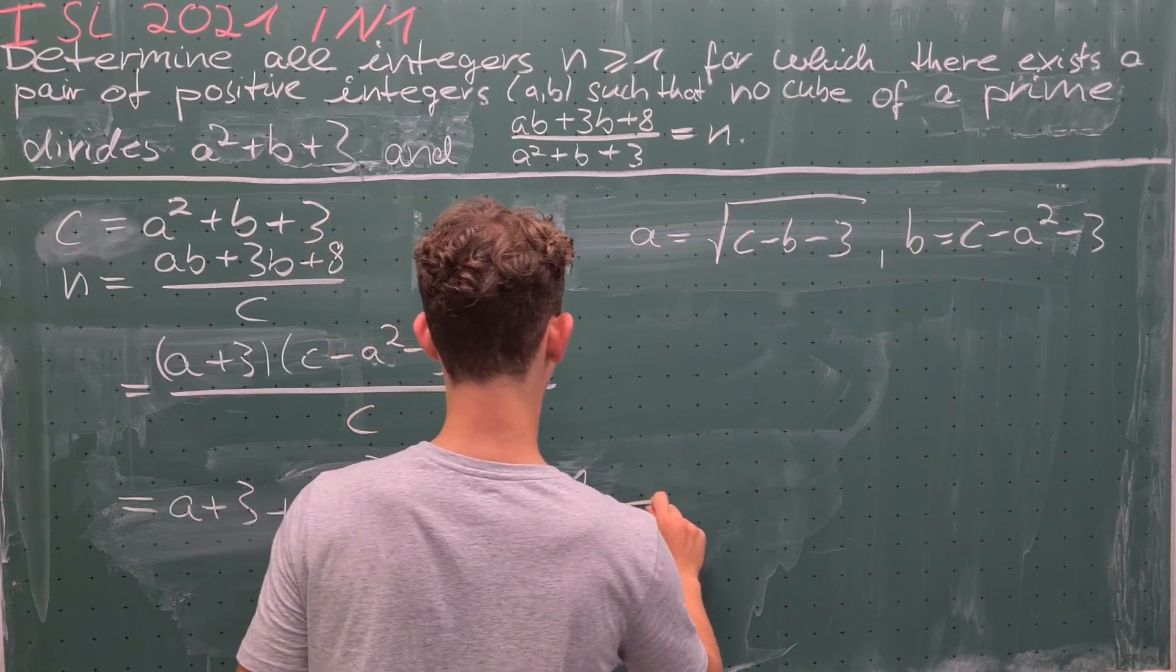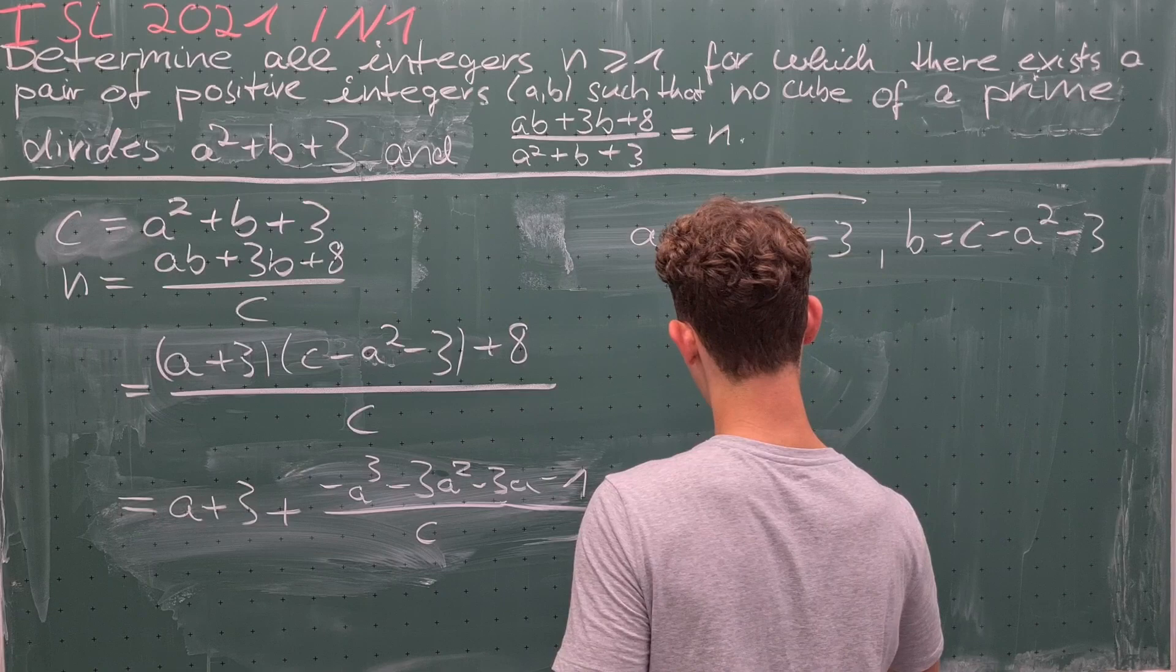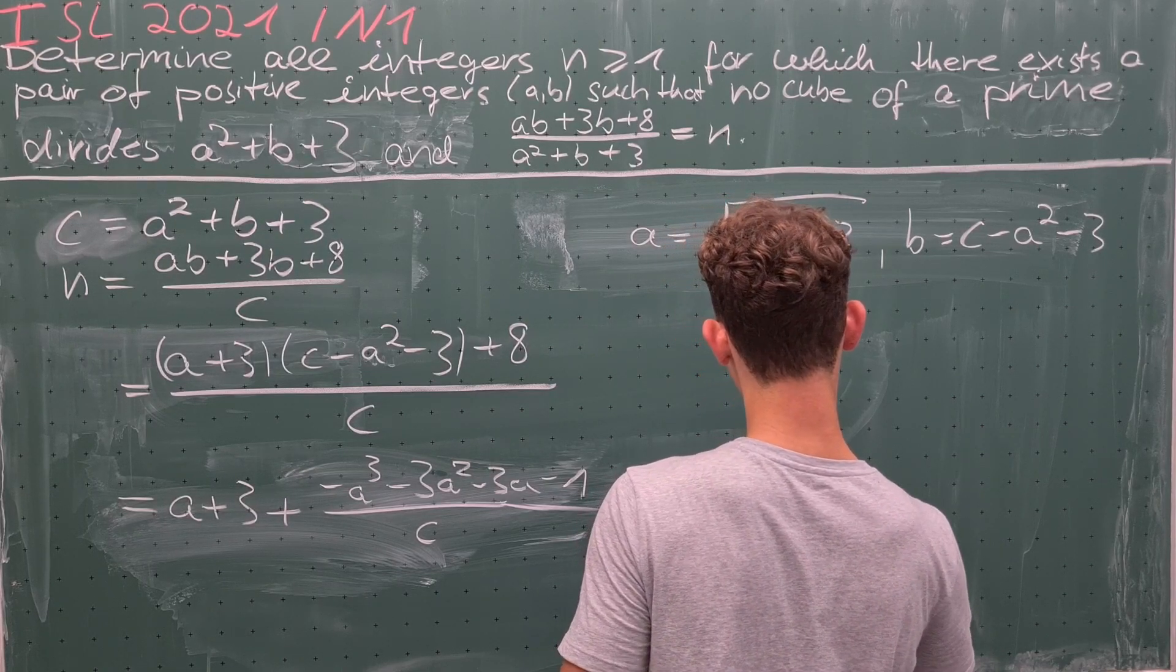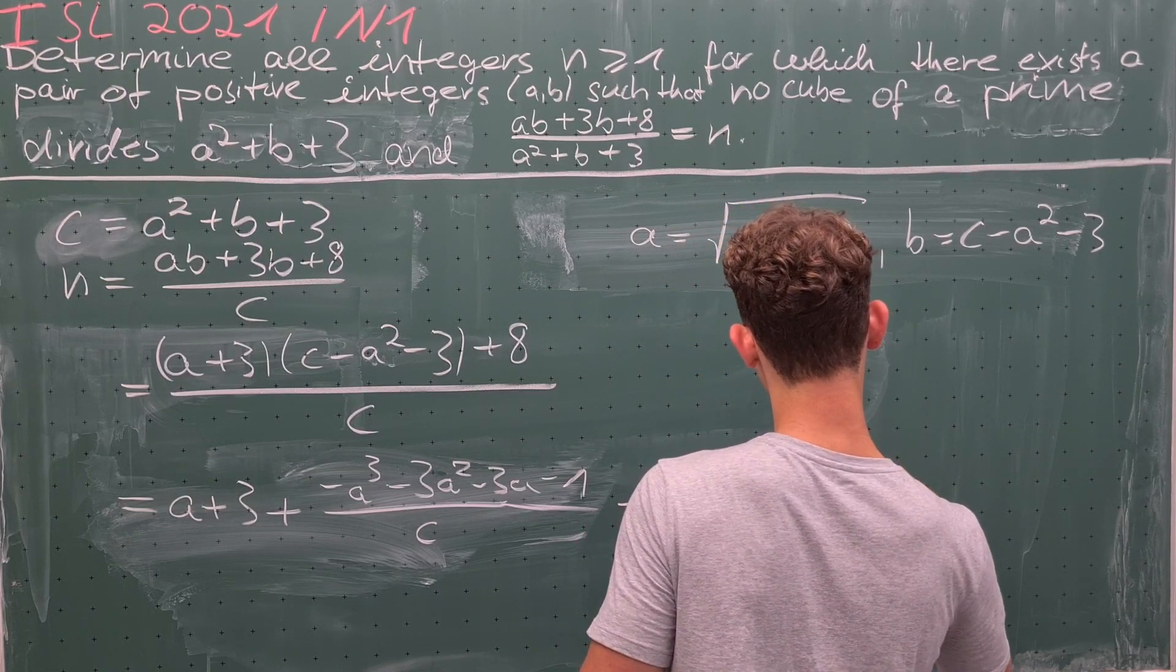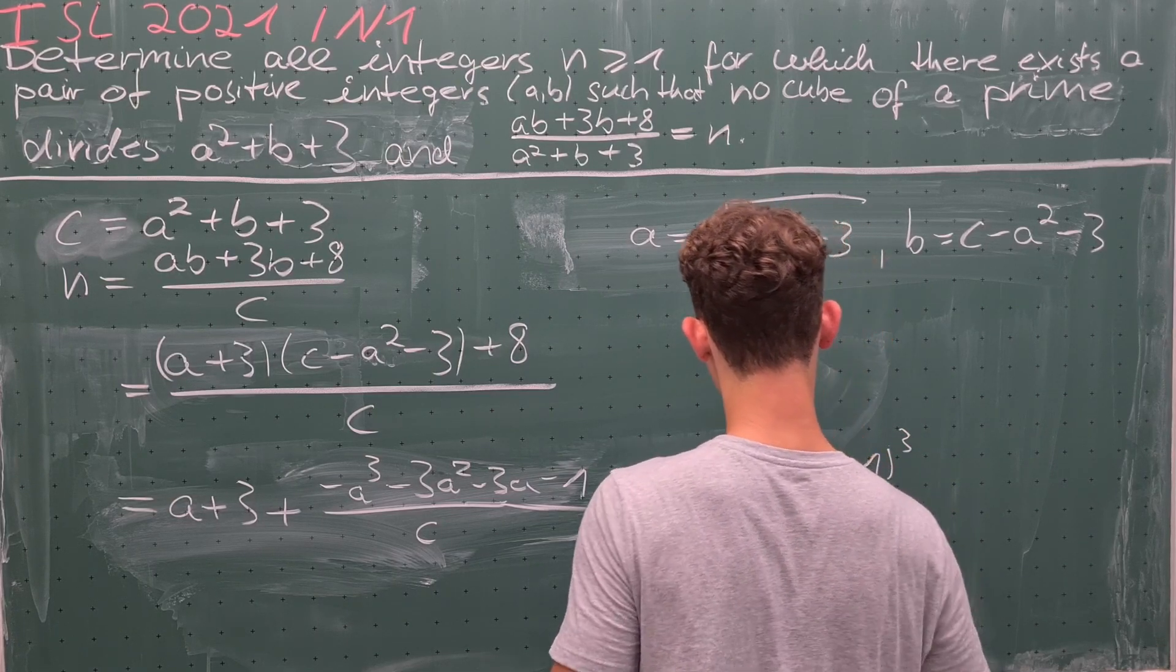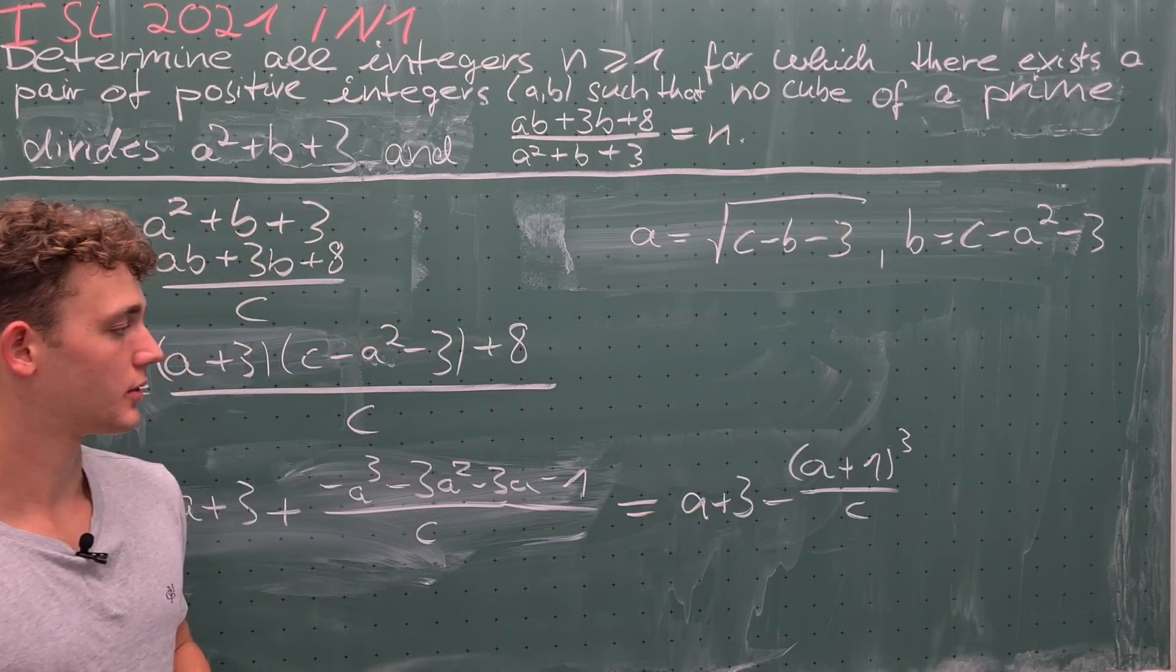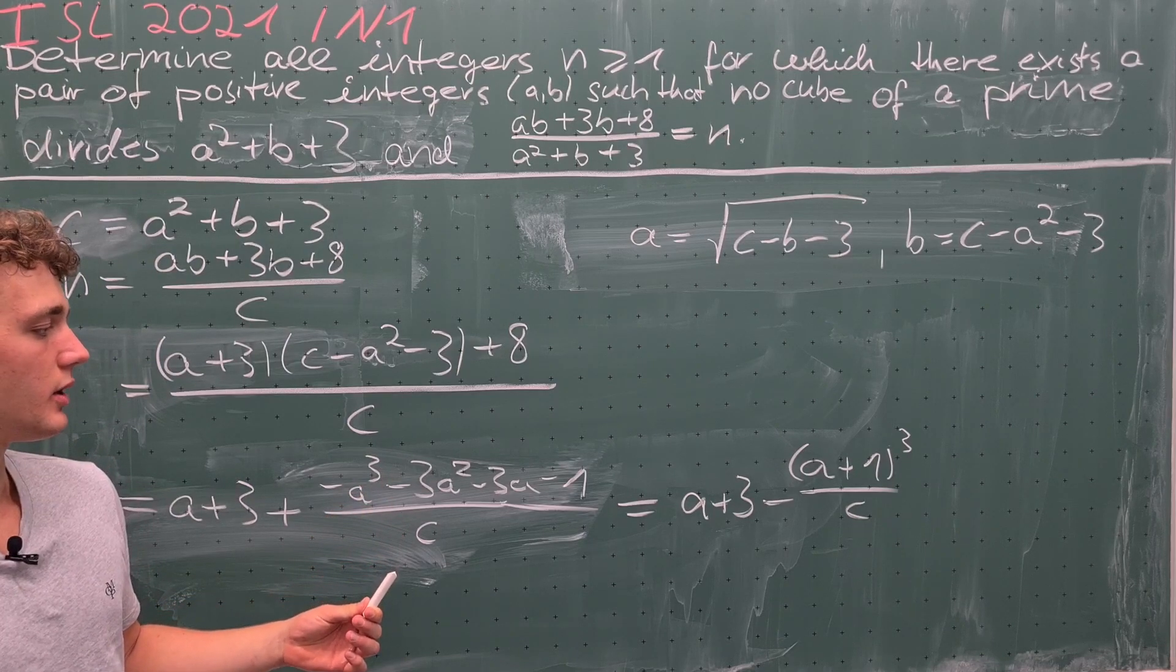So we have that n = a + 3 - (a+1)³/c. This is really good, because we already know that no cube of a prime divides c.